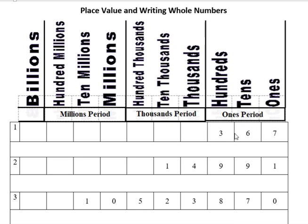This number in number one here is three hundred sixty-seven, as in three hundred sixty-seven dollars. And the hundreds, tens, and ones all make up the ones period.